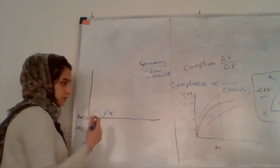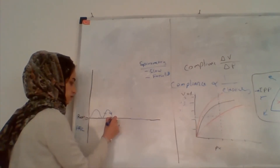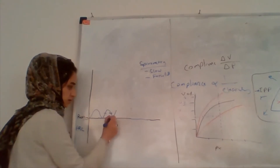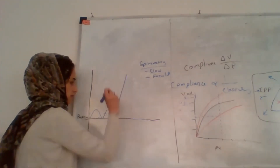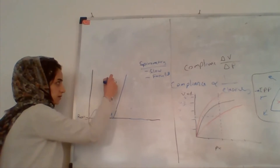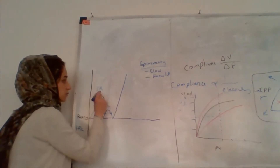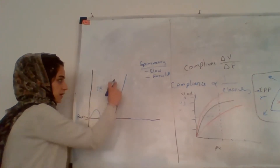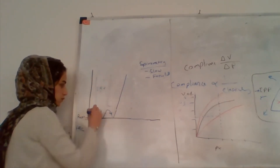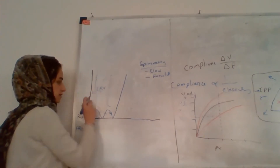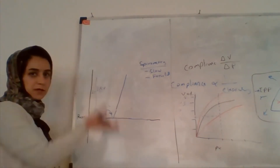Then we will ask the patient to do a full inspiration after normal tidal breathing. The extra inspiration we can do beyond tidal inspiration is called the inspiratory reserve volume, because it is an extra breath — a reserve. The tidal volume plus the inspiratory reserve volume together are called the inspiratory capacity.